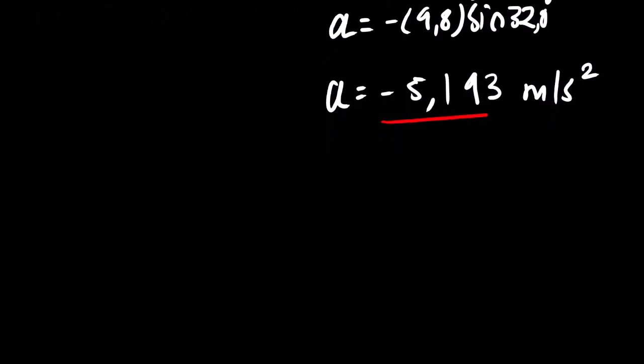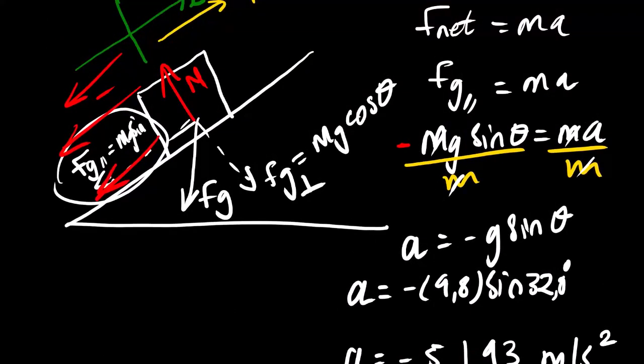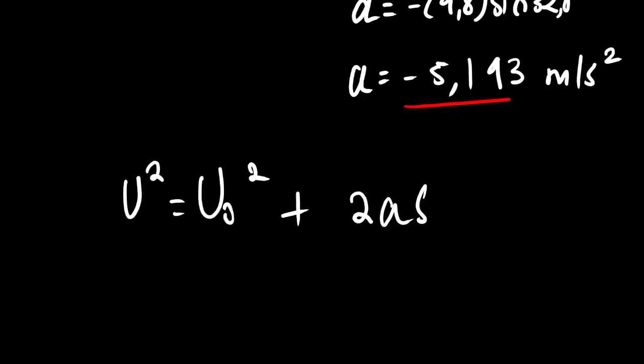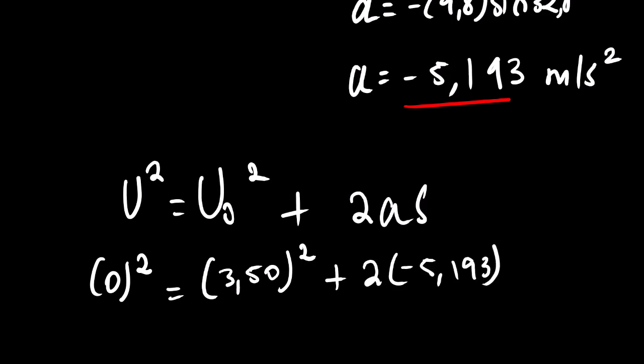Now since we have the deceleration of the object, we can use our equations of motion to find S. Sometimes it's changing X, sometimes it's S, sometimes it's simply D. Now we know that the object somewhere on top of this incline will stop. So the moment it stops, its velocity will be zero meters per second. So going back to our equation, our final velocity is zero meters per second. Our initial is 3.50 squared plus 2 negative 5.193 S.